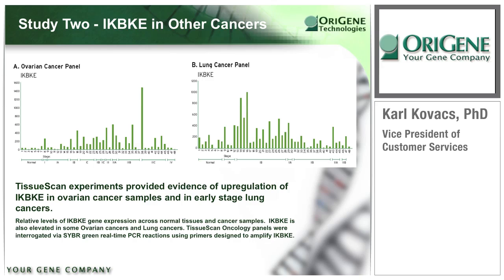Next, we tested IKBKE expression in other cancer types. These graphs indicate the measured levels across two panels. Note that disease stages increase from normal to stage 4, left to right. IKBKE expression is increased in ovarian cancer in a stage-dependent manner, whereas in lung cancer it is more elevated in early-stage cancers.